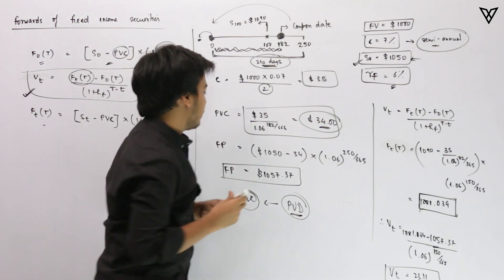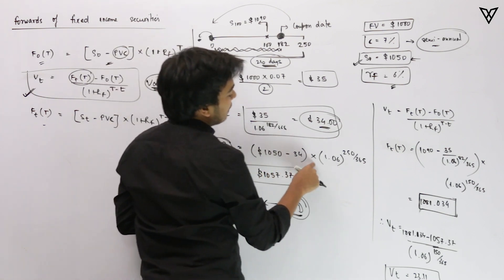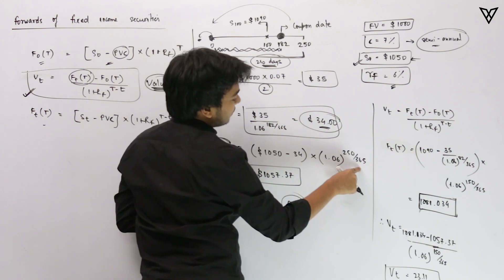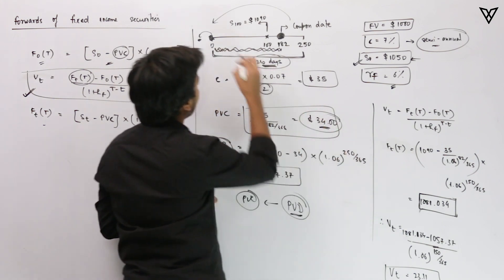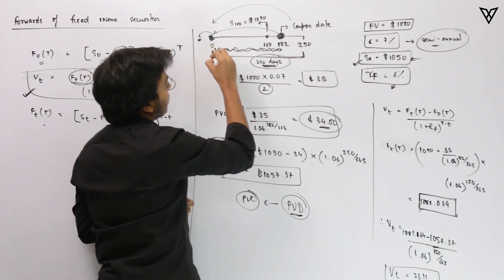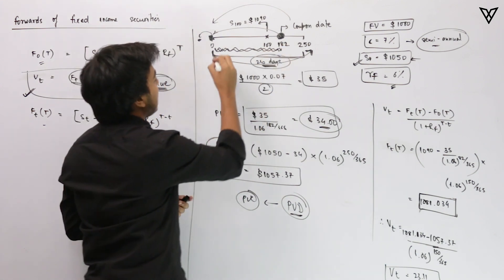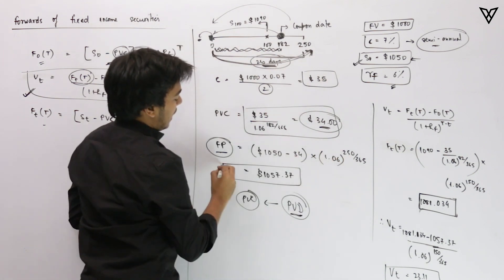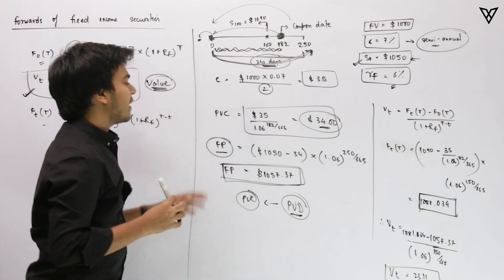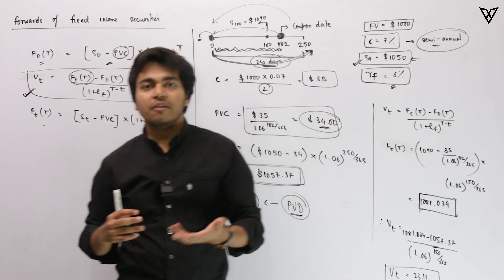Now calculate the forward price. You have the spot price, deduct the present value of coupon, then compound forward: (1050 − 34) × 1.06^(250/365). We take 250/365 because we are standing at today's spot price — and the PVC has already been brought back to today — so we need to compound everything forward to day 250. That gives you the forward price. Make sure you pause the video and do these calculations yourself.